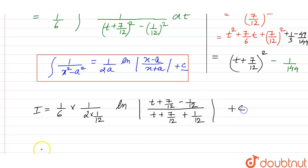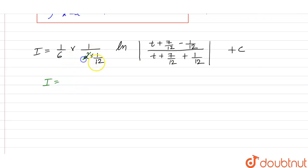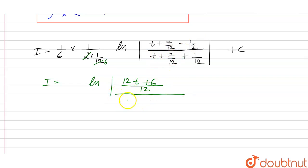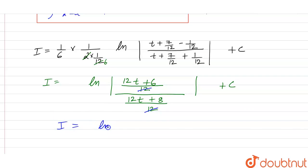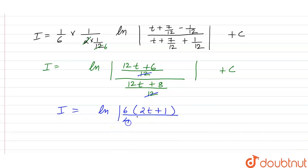Simplifying, the 6s cancel out. We have ln modulus of 12t plus 7 minus 1, which is 12t plus 6, over 12t plus 7 plus 1, which is 12t plus 8, plus C. The 12s cancel out, and taking 6 common from numerator gives 2t plus 1.